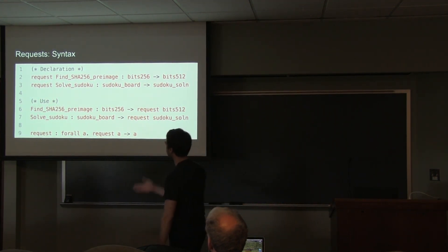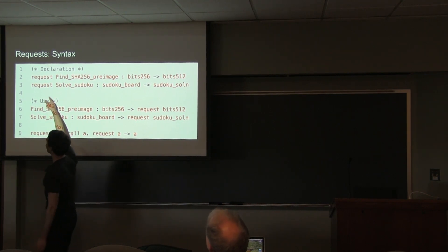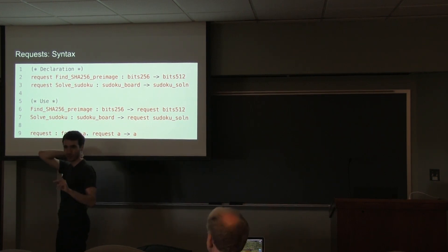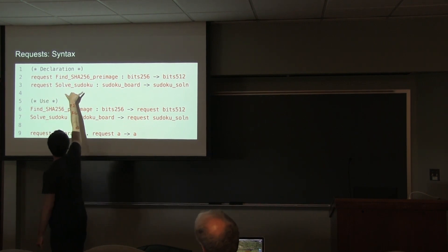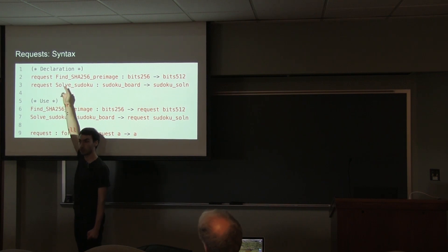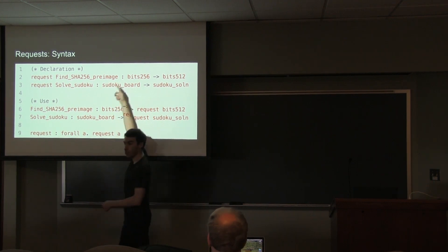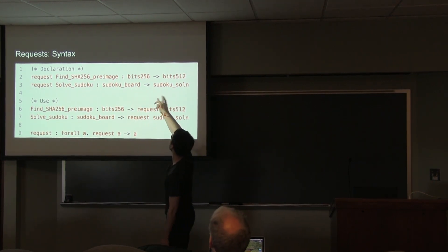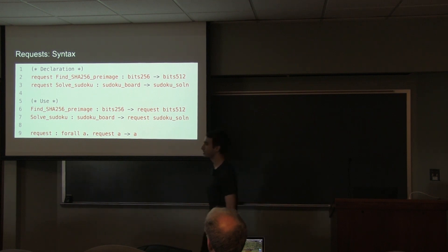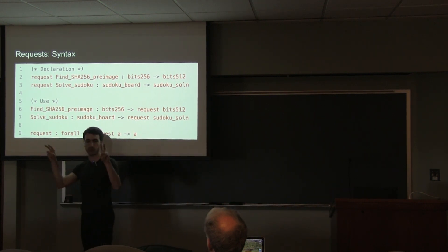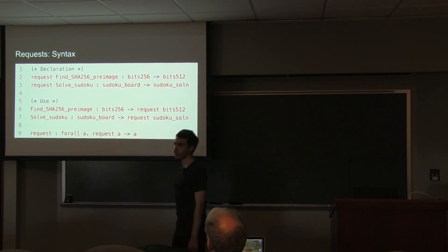Here is some concrete syntax for declaring a request. For example, you'd say 'request solve_sudoku' — this introduces a new constructor. 'solve_sudoku' is a request parameterized by a Sudoku board (the puzzle) and expects to return a Sudoku solution. Then you imagine a function 'request' which performs a request — it takes a request for an A as an argument and magically produces an A.